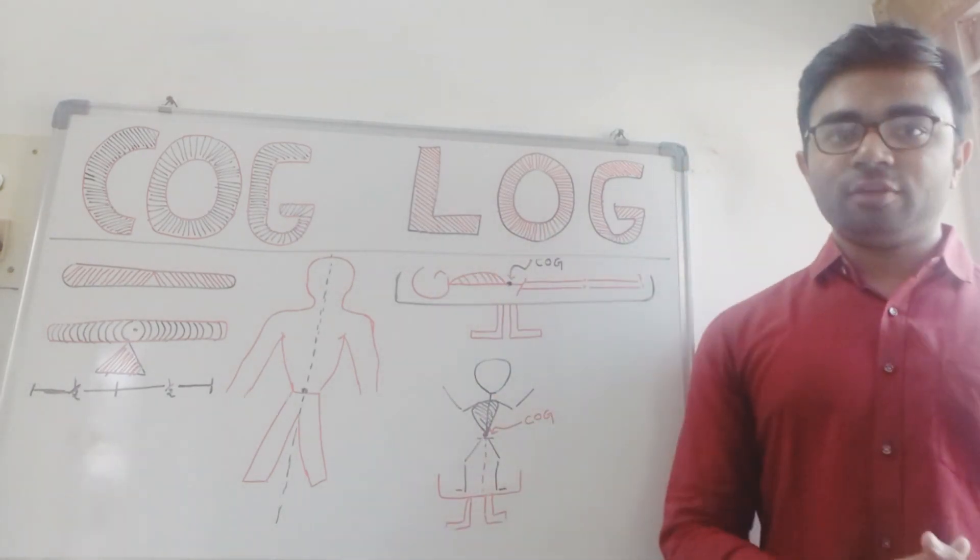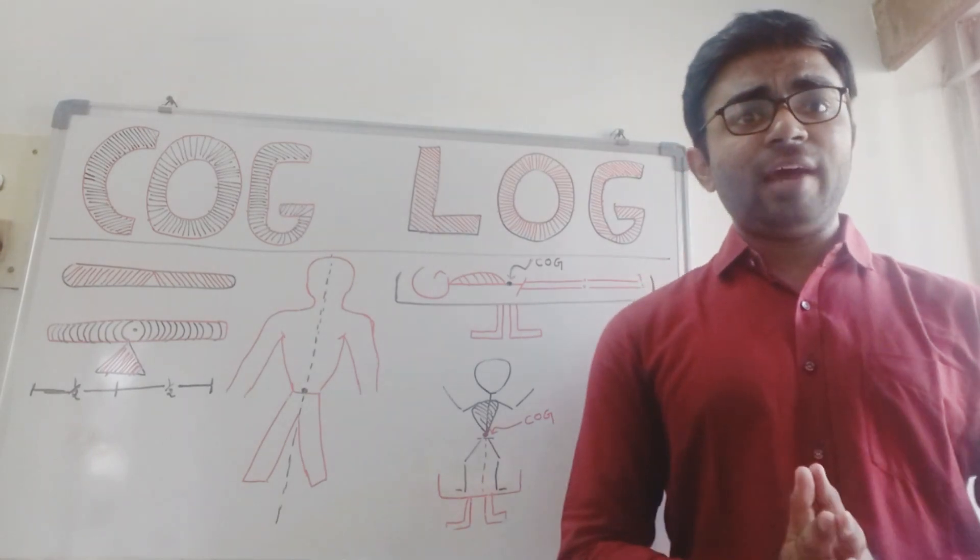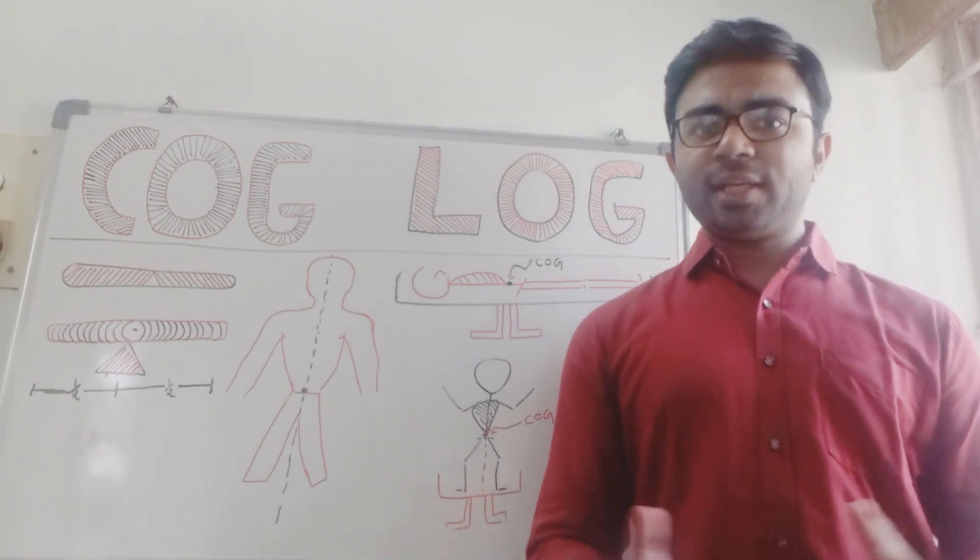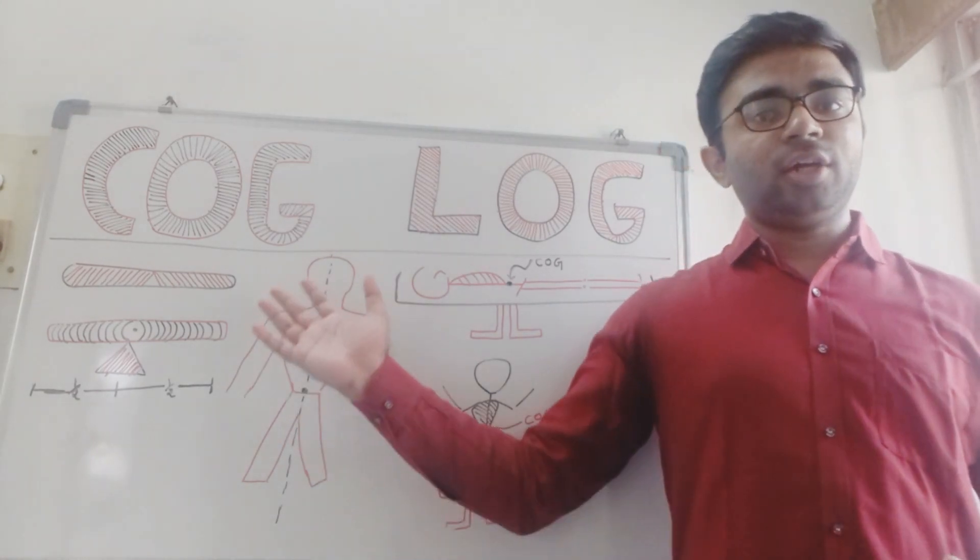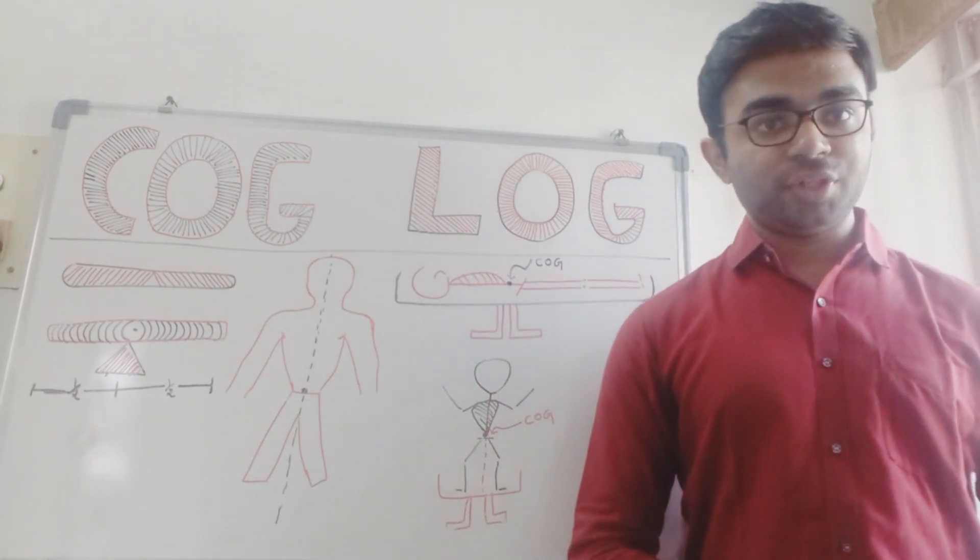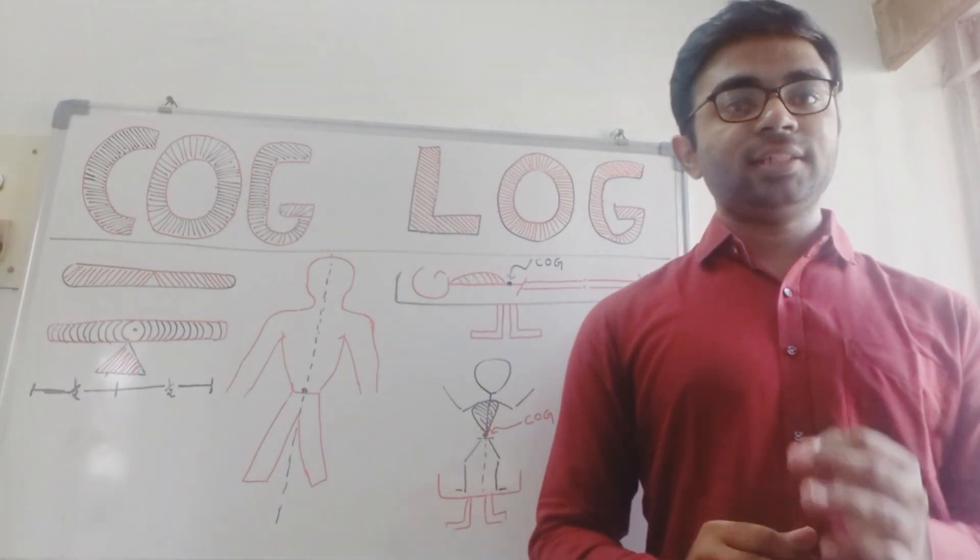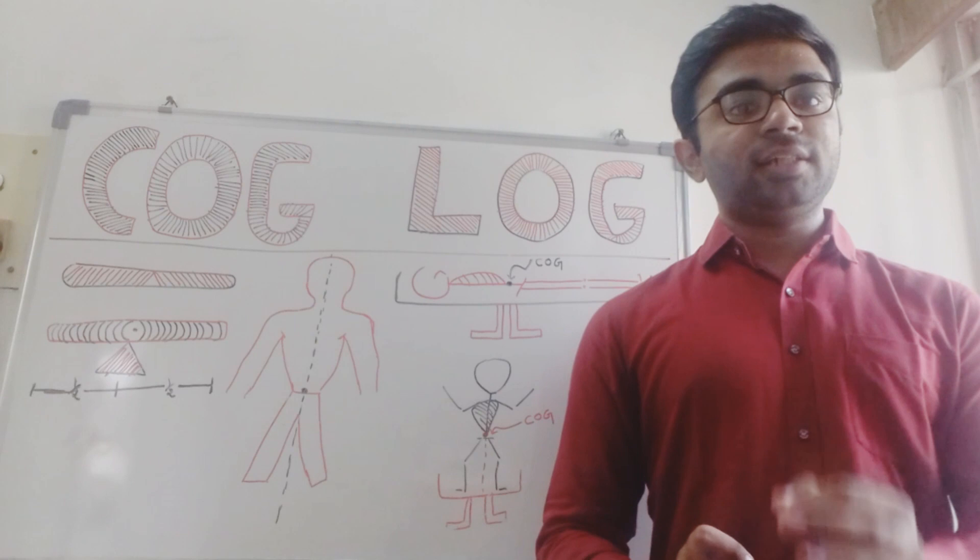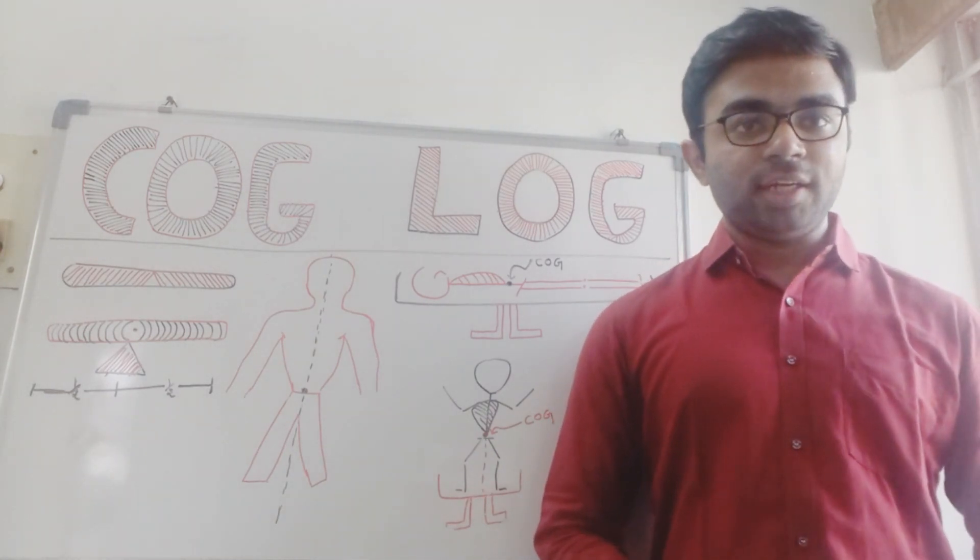Next concept is line of gravity. Line of gravity means what? It's a very simple concept to understand. Whether you take a rod or a person in the supine lying position, line of gravity is a vertical line which passes through the center of gravity.